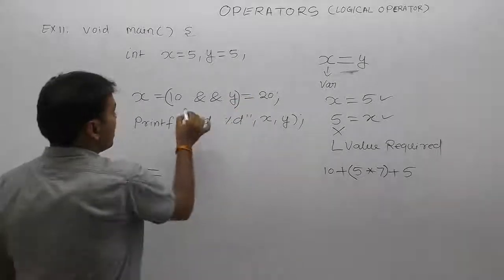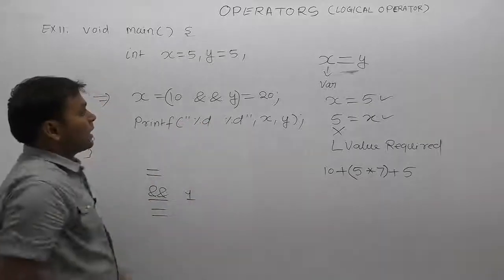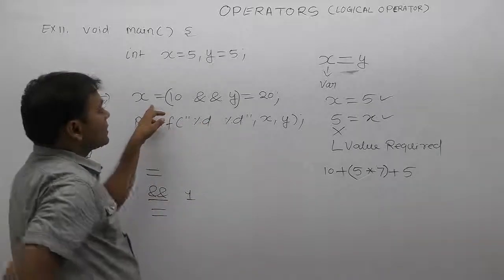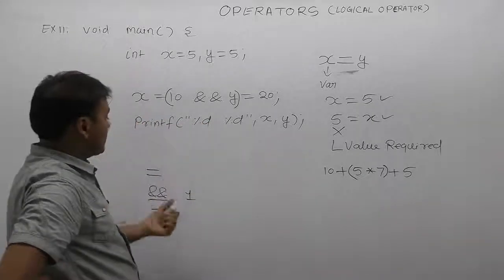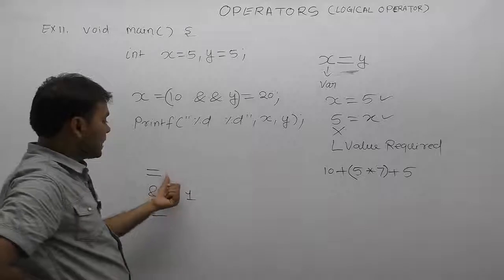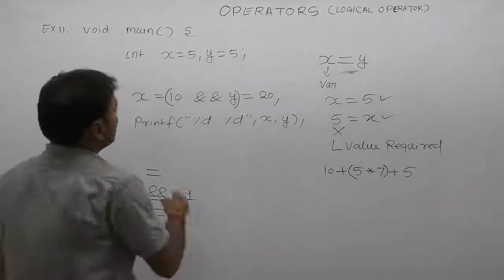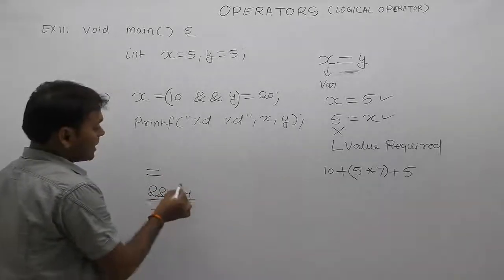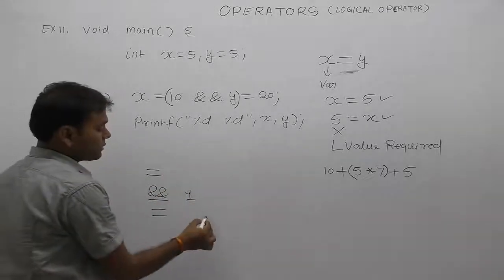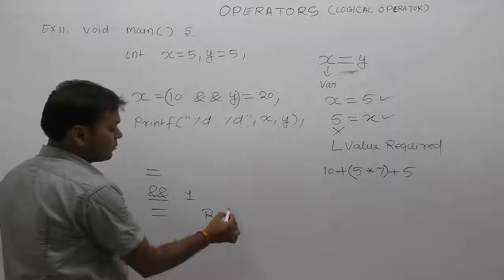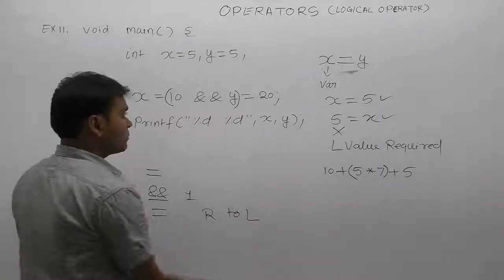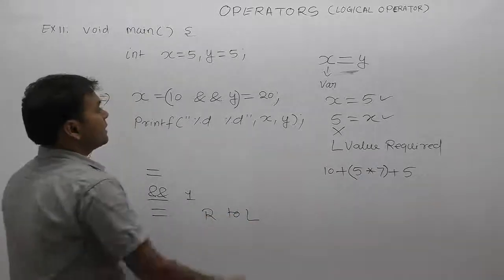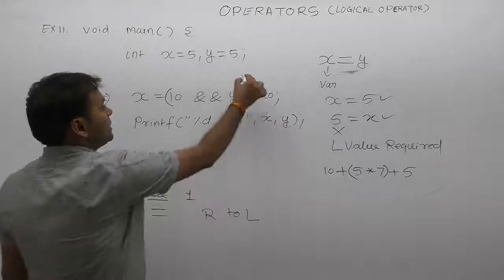The remaining operators are assignments, which all have the same priority. Assignment operators are solved using right-to-left associativity rule. According to right-to-left, the chance is checked for that one.